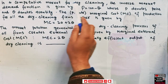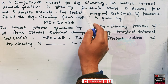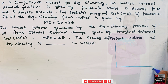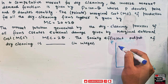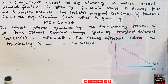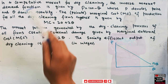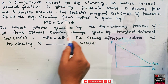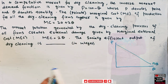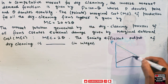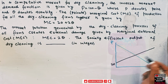In a competitive market for dry cleaning, the inverse market demand function is given as P = 100 minus Q. We can draw it graphically with quantity on the horizontal axis and price on the vertical axis. This is our inverse market demand function, also called the marginal benefit curve, where P denotes the price and Q denotes the quantity. The private marginal cost of production for all dry cleaning firms together gives us a total marginal cost, with an intercept of 20.